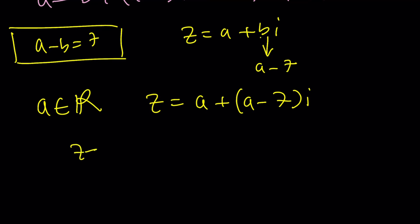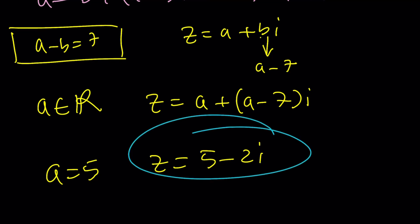Suppose A is equal to 5, then Z is just going to be 5 minus 2I. Make sense? Is that right? 5 minus 7 is negative 2. I did it right, because sometimes I make arithmetic mistakes. But yeah, that would be one of the solutions. And you could definitely check that, plug it into the equation, it should satisfy.